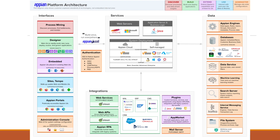When we talk about interfaces, integration, and data there is a lot inside. In interfaces we have process mining to understand and in-depth analyze processes. In the designer we can design all the objects and create our own applications. We also have sites, Appian portal, and admin console. The admin console is where we do all the admin configurations.